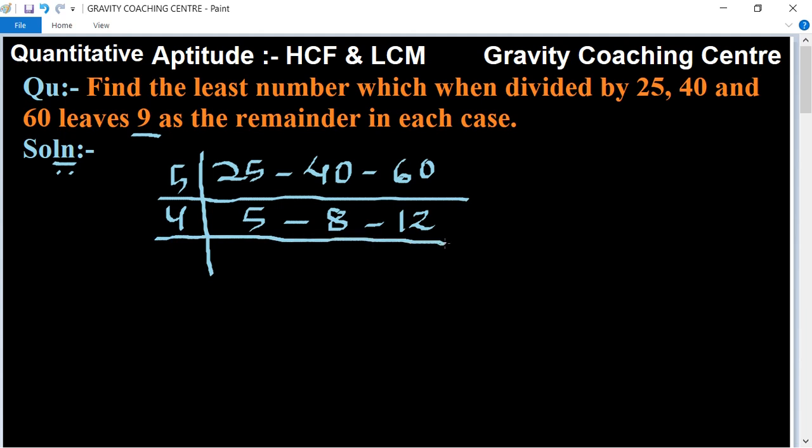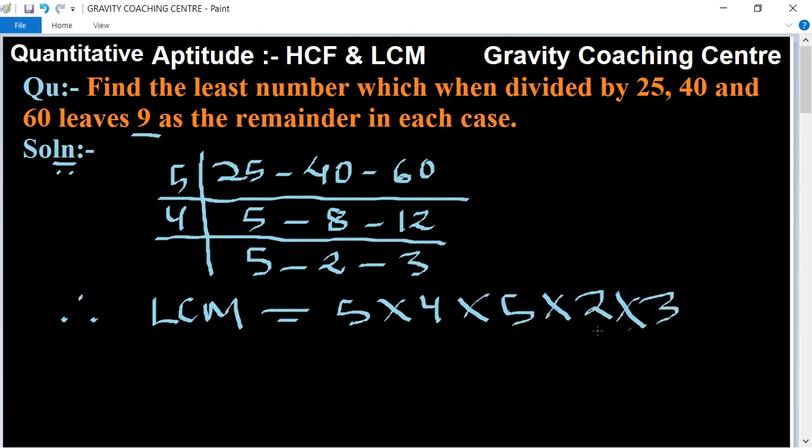After factoring to 5, 2, 3, the LCM equals 5 × 4 × 5 × 2 × 3 which equals 600.